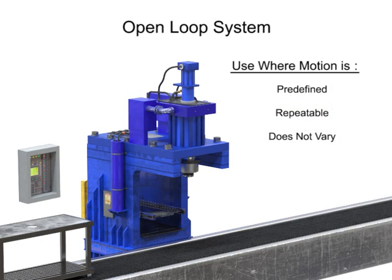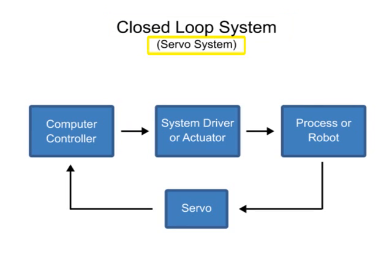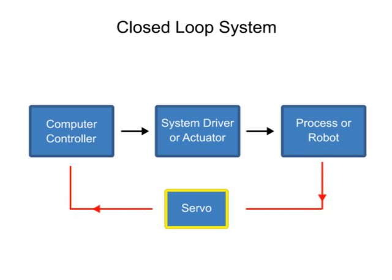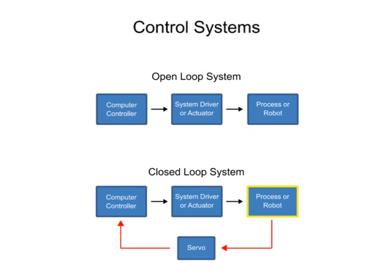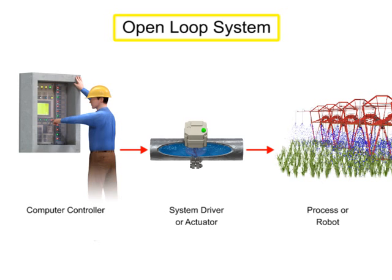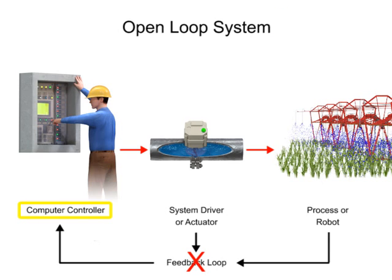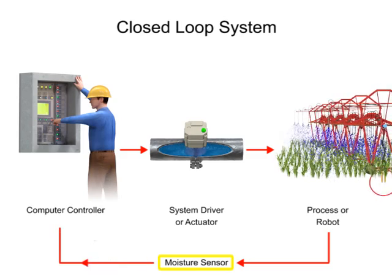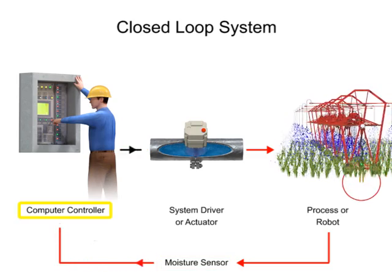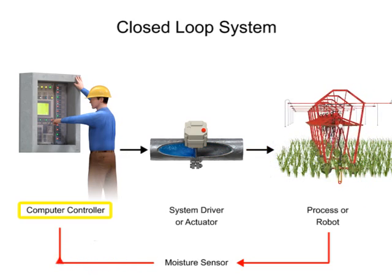The second type of control system is called closed-loop control or servo control. A servo is a device that uses error-sensing feedback to control the motion of another device. The primary difference in an open versus closed-loop system is the addition of a feedback loop that allows the controller to make adjustments to the robot. In our previous example of a sprinkler, the system was open-loop because the controller received no feedback. But if a moisture sensor is added, it becomes a closed-loop system. The sensor measures the moisture density of the soil and sends that information back to the computer controller, which can then make adjustments to the quantity of water coming from the sprinkler.